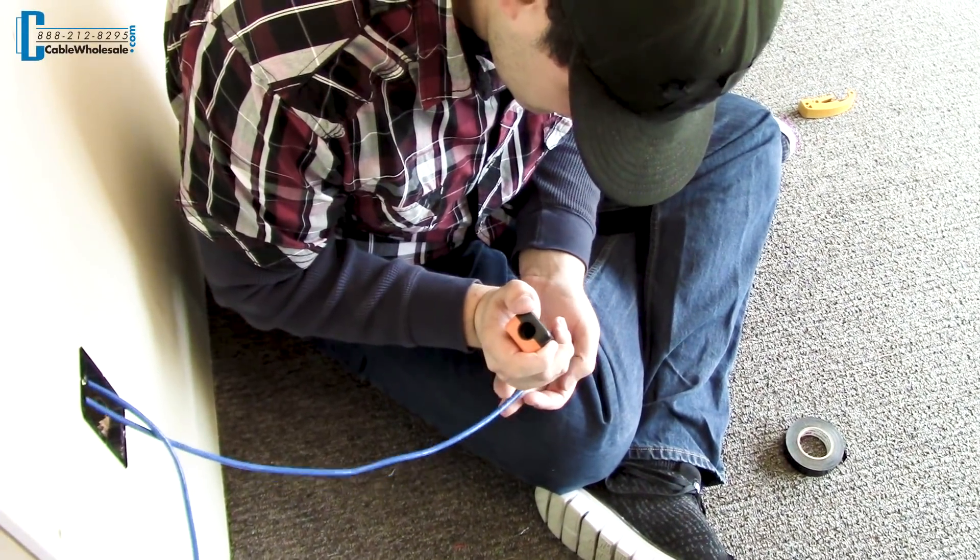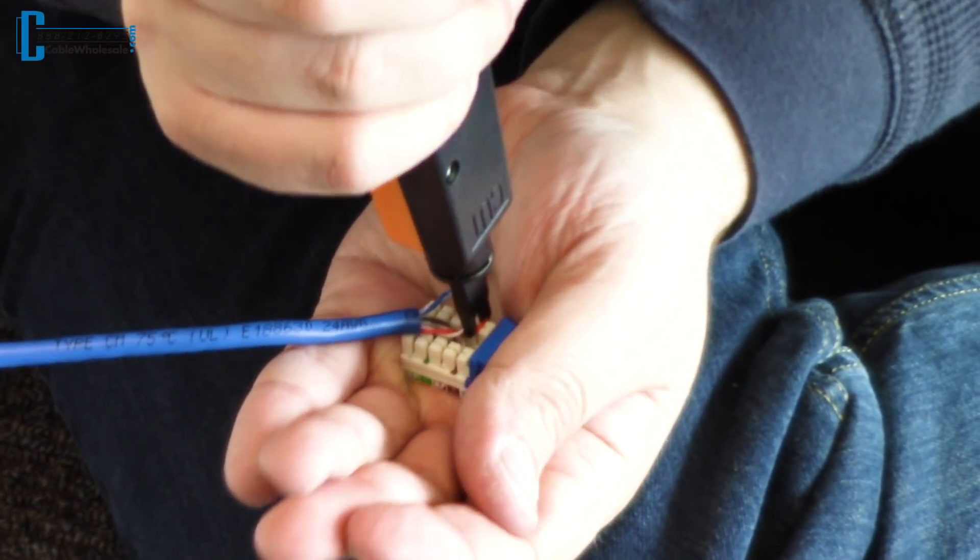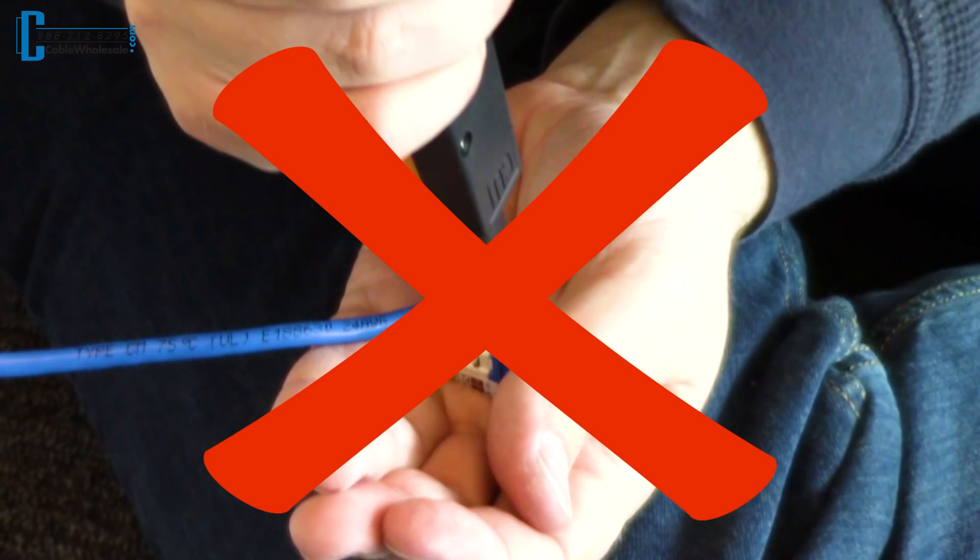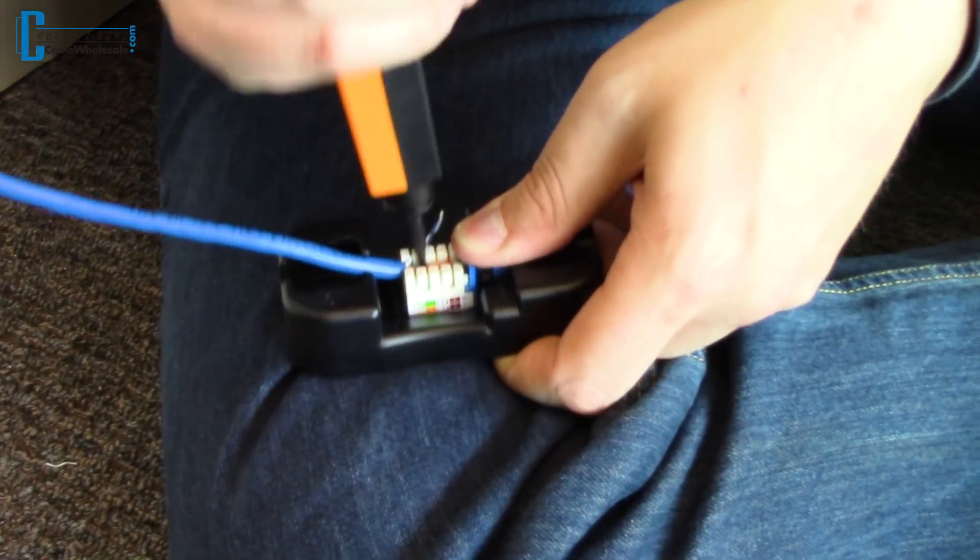Punching down a keystone in a room where you are providing an access point to a network can be difficult when you don't have a stable platform to do the work. With this punch down stand, you can easily punch down any keystone without the aggravation.